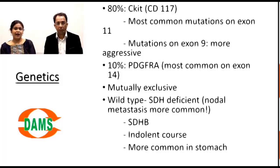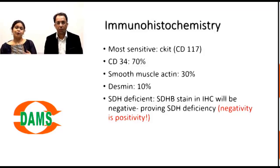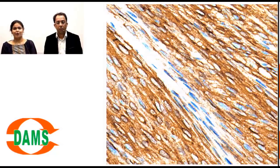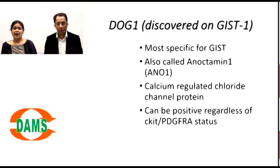Notably, SDH-deficient GISTs can show lymph node metastasis — rare for GIST overall. On immunohistochemistry, CD117/c-kit is the most sensitive marker. Approximately 70% of cases are CD34 positive; smaller percentages are SMA and Desmin positive. In SDH-deficient GIST, IHC for SDH will be negative — and that negativity is diagnostic positivity for this subtype. An IHC slide shows brown cytoplasmic staining indicating c-kit overexpression.